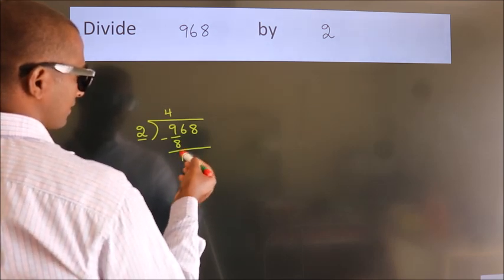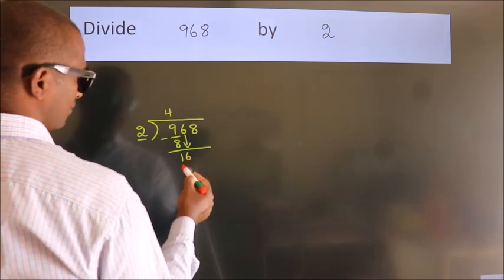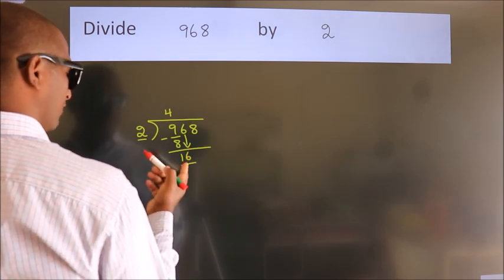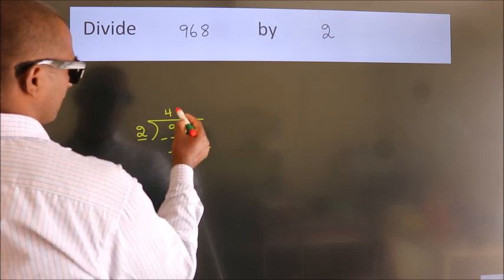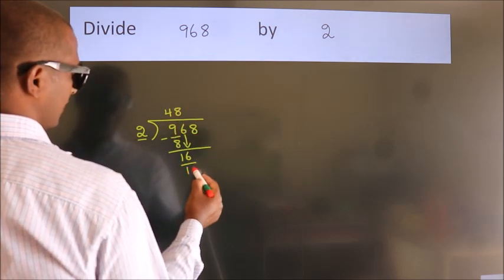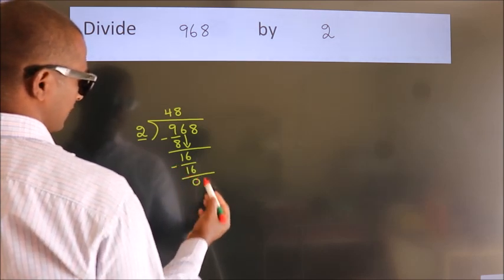After this, bring down the beside number. So 6 down, so 16. When do we get 16? In 2 table, 2 eights 16. Now we subtract. We get 0.